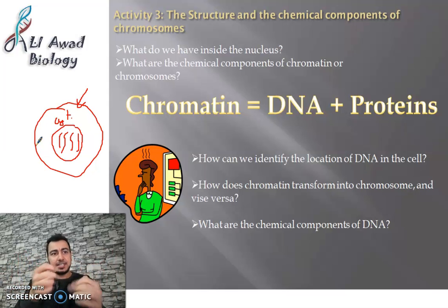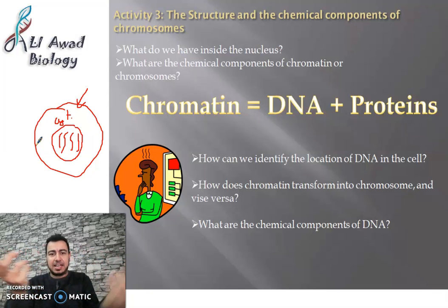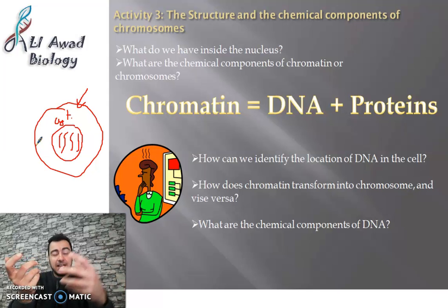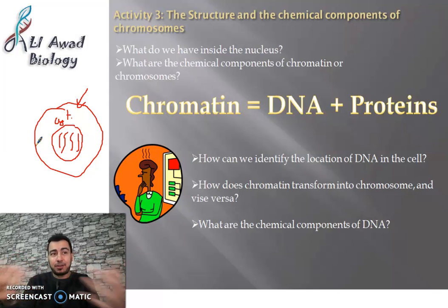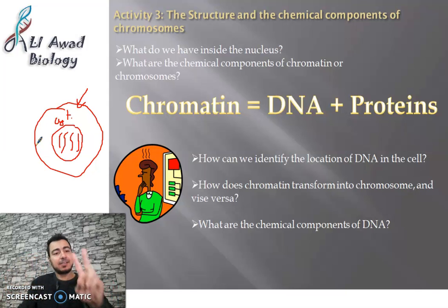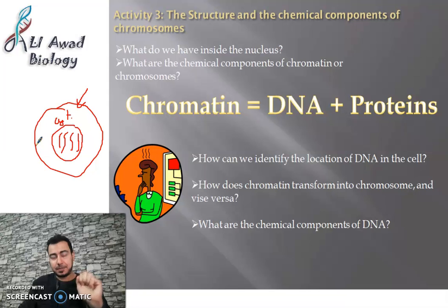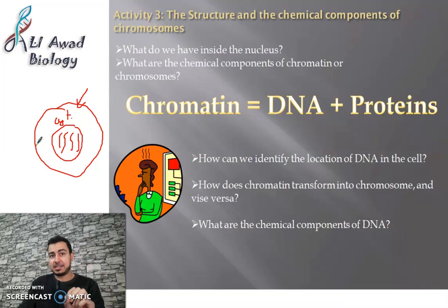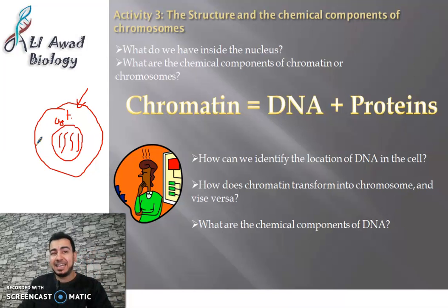Now, what is chromatin — what is it made up of? What are the chemical components of the chromatin? The chromatin is made up of two chemical substances. The first chemical substance is called DNA.